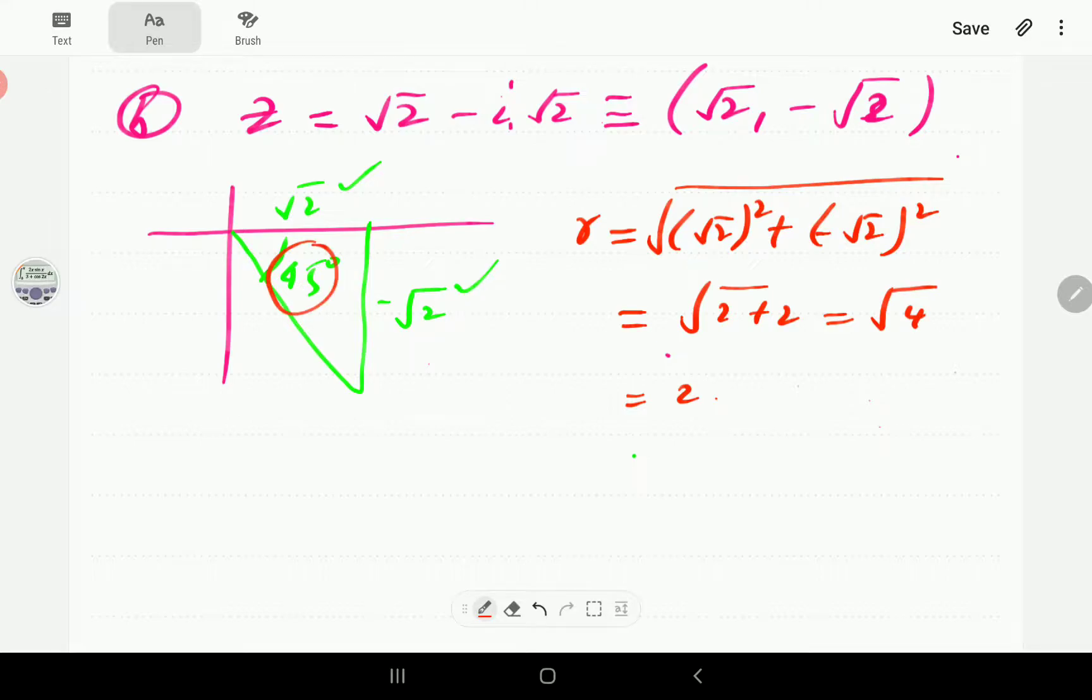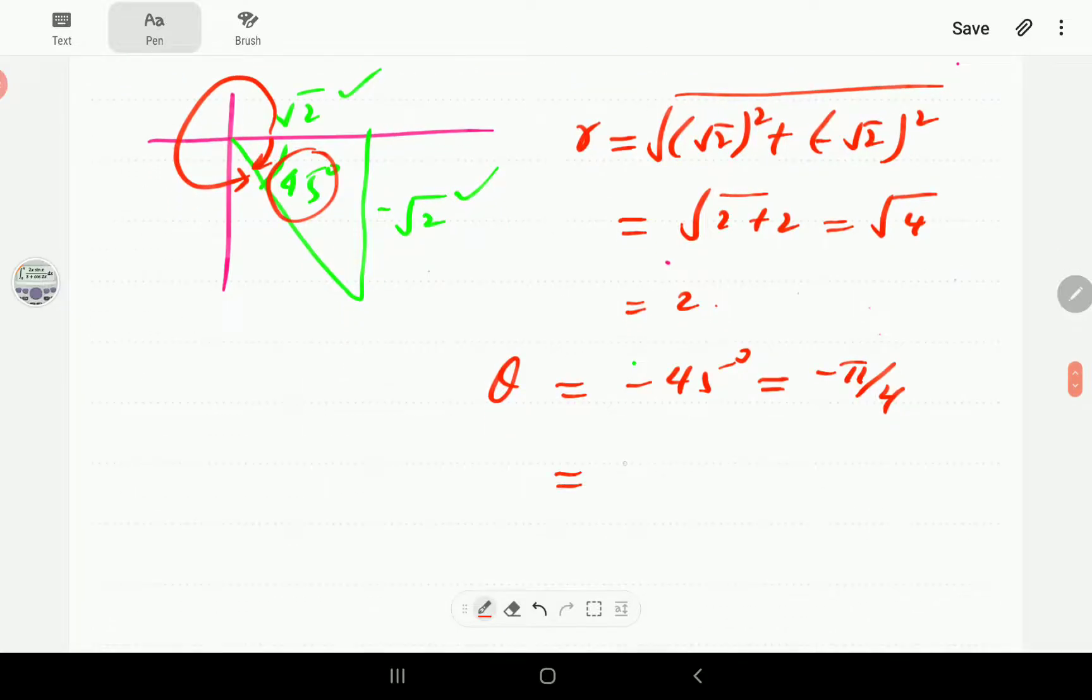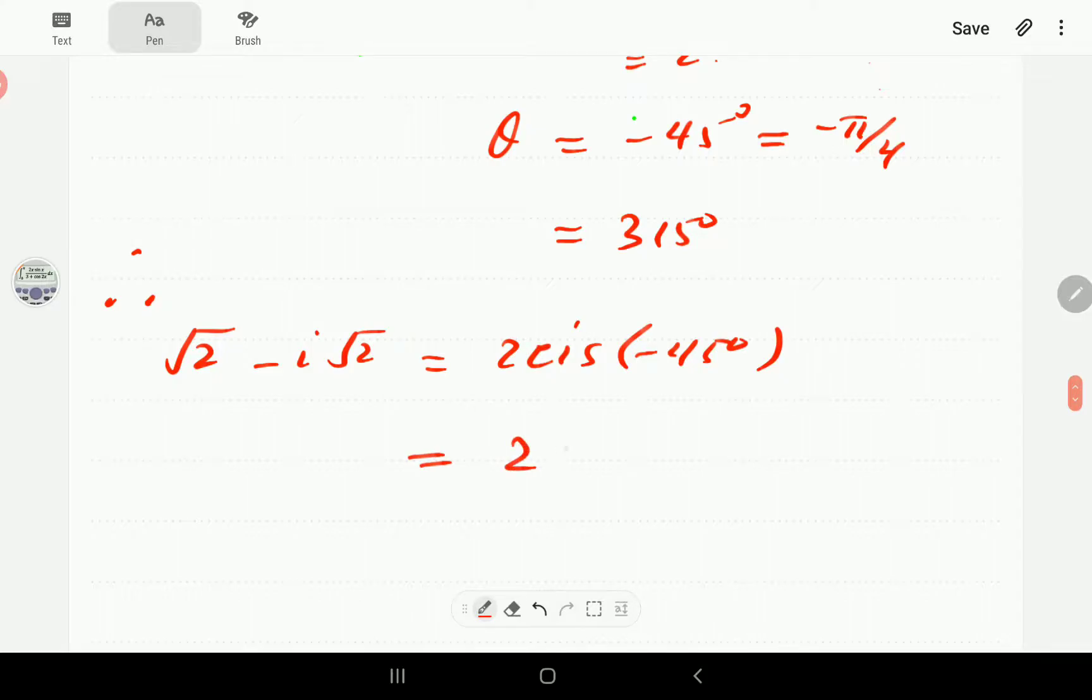Now, this is 45 if we can work out by inspection. If we read the angle this way, that means our argument is going to be negative 45 degrees or minus pi over 4. If we want, we could read it the other way. In which case, it's going to be 315 and then you can do the corresponding thing in radians. So, that means square root 2 minus i square root 2 is going to be 2 cis negative 45 degrees alternatively 2 cis negative pi on 4. That's going to be our complex number in polar form.